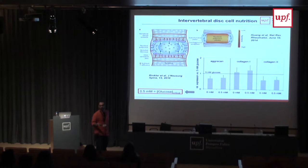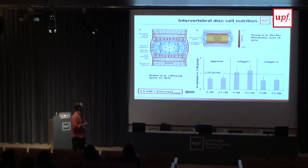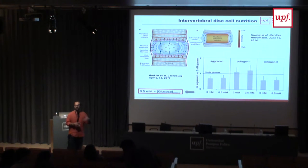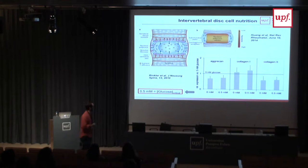Small solutes — typically oxygen and glucose — must diffuse through the disc to reach cells at the center. At the same time, cells perform glycolytic respiration and produce lactic acid, which lowers the pH. This lactic acid must also be eliminated through diffusion via the endplates.